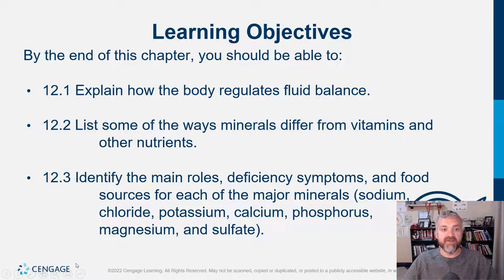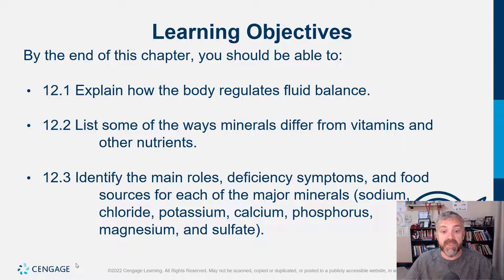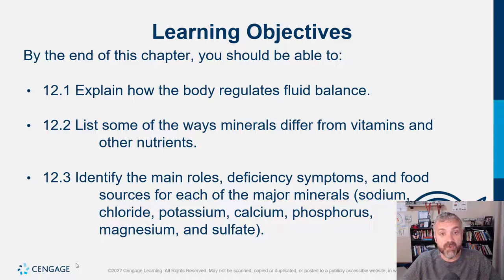In this chapter, we explain how the body regulates fluid balance. We list some of the ways minerals differ from vitamins and other nutrients. We identify the main roles, deficiency symptoms, and food sources for each of the major minerals, which are sodium, chloride, potassium, calcium, phosphorus, magnesium, and sulfate.